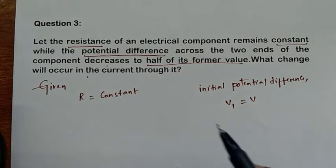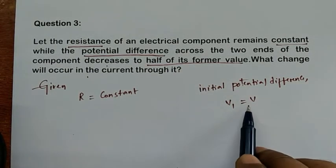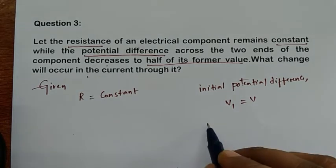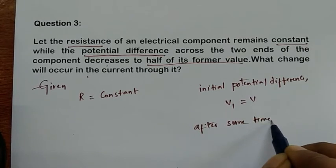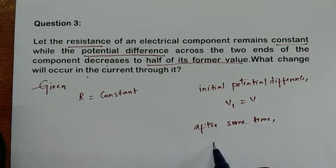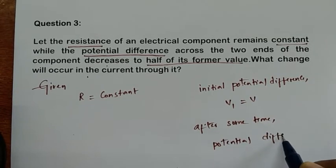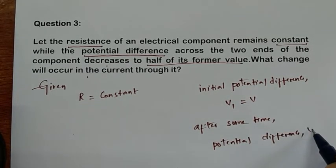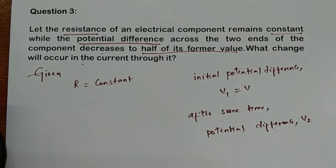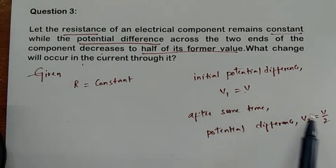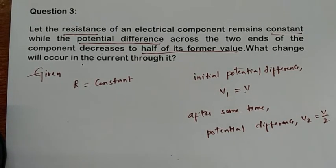After some time, what happens to this potential difference? It becomes half of its former value. So after some time, the potential difference V2 is equal to V by 2 — that is what the problem says. Initially it is V, now it becomes V/2.